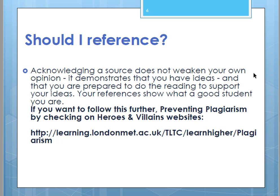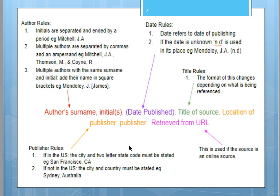If you want to prevent plagiarism, check plagiarism and reference websites. If you do the references, you will be a good student. The rules for referencing — here is an example for APA style references. For APA, you put the author surname first, then the first name, followed by the date published, the year, the title of the source, location such as London or New York, the publisher such as Oxford or Cambridge or Penguin, and the URL retrieved from.